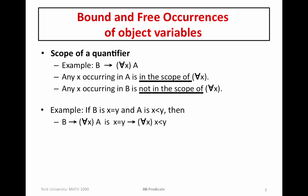So let's look at an example. If we let B be the atomic formula x equals y, and A be the atomic formula x less than y — where less than is of course a predicate — then this example becomes: x equals y implies for all x, x less than y. Can you determine which occurrences of x occur in the scope of a quantifier and which do not? We have three occurrences of x within this first-order formula: here's the first occurrence, here's the second, and here's the third.